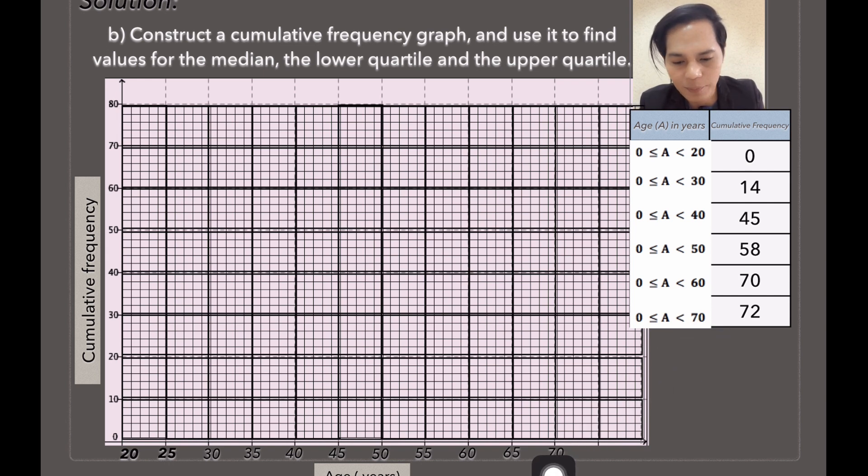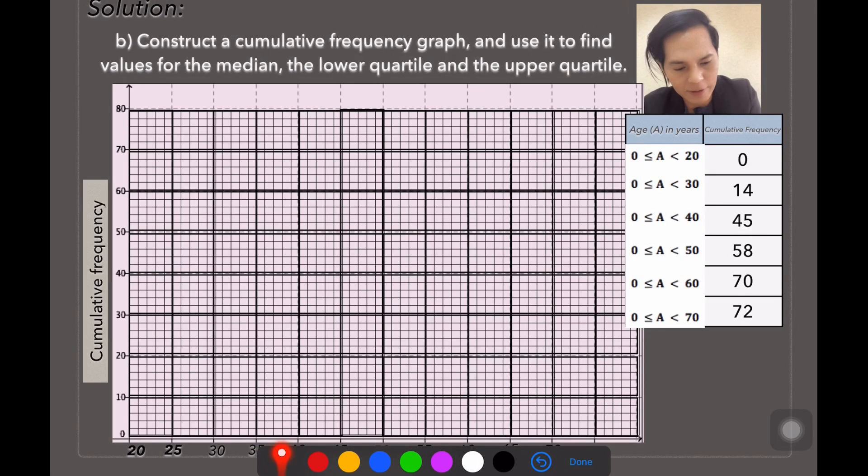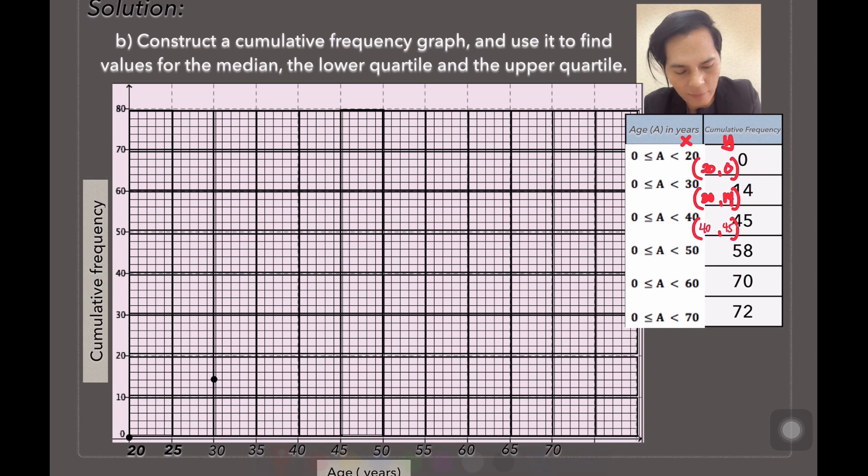Next one is, we are going to plot the points. The first ordered pair here is, look at this, it's 20 and 0, I mean. Next one is 30 and 14. Then next one is, look at this, it's 40 and 45.